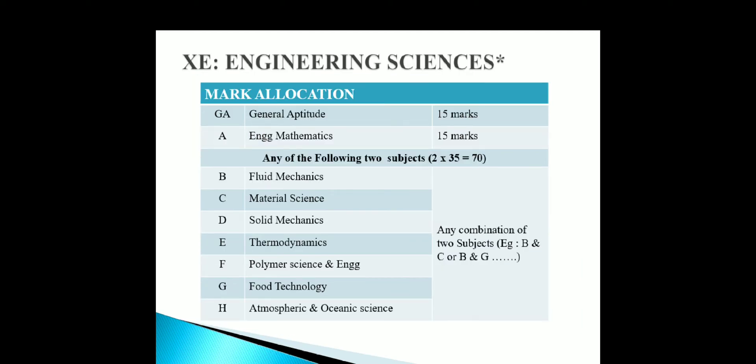How is Engineering Sciences structured? Engineering Sciences covers General Aptitude and Engineering Mathematics, and the remaining marks come from subjects you choose — options B, C, D, E, F, G, H. You choose two papers, for example Fluid Mechanics and Material Science, or Fluid Mechanics and Solid Mechanics — any two combinations. Each subject is worth 35 marks, so two subjects give 70 marks for technical subjects, and the remaining 30 marks are General Aptitude and Engineering Mathematics.